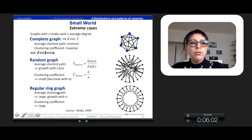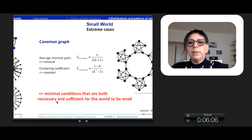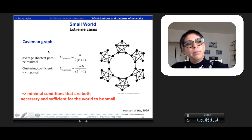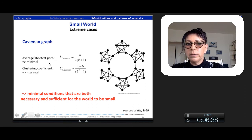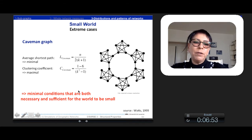So in between these two extreme cases, Watson and Strogatz showed that an important and very typical kind of network would be this caveman graph, which is constituted by different communities linked by weak links or ties. And this kind of graph has the property to have a minimal average shortest path but a maximal clustering coefficient. And so these two properties are the minimal conditions that are both necessary and sufficient for a world to be small. So after this demonstration,